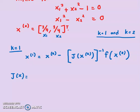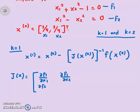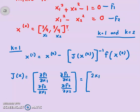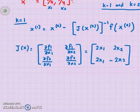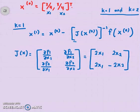The Jacobian is set up as: f1 with respect to x1, f1 with respect to x2 — then the second function — f2 with respect to x1 and f2 with respect to x2. We already did this in the previous video. Taking derivatives: with respect to x1, I get 2x1; with respect to x2, I get 2x2. For the second function: with respect to x1, I get 2x1; with respect to x2, I get negative 2x2.